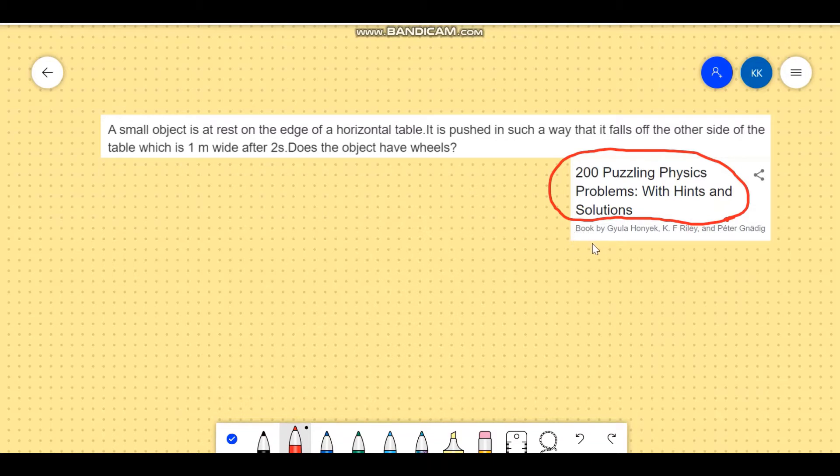This problem is on the relatively easy side. This is problem number two of the book. Let's read the question: A small object is at rest on the edge of a horizontal table. It is pushed in such a way that it falls off the other side of the table which is one meter wide after two seconds.